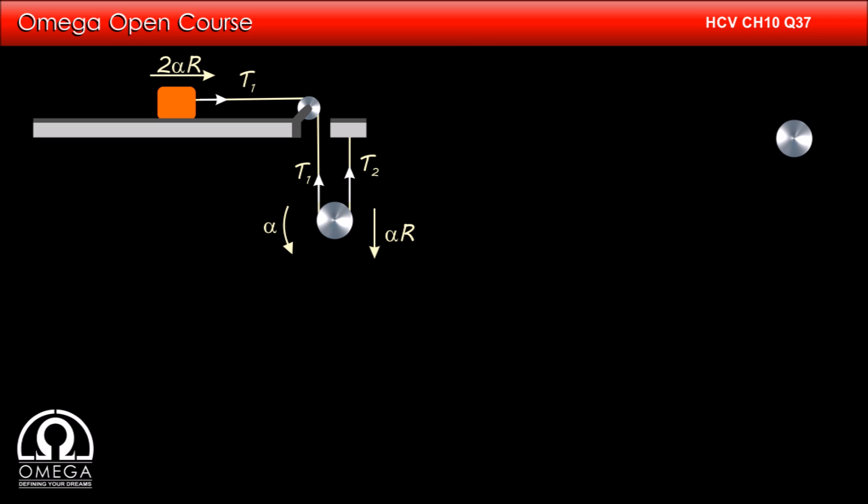Now, let us draw the free body diagram of the pulley. If we denote its mass by capital M, then gravitational force of capital Mg is acting on the center of mass of the pulley. The pulley is being pulled by tension T1 in the string on the left and tension T2 in the string on the right.